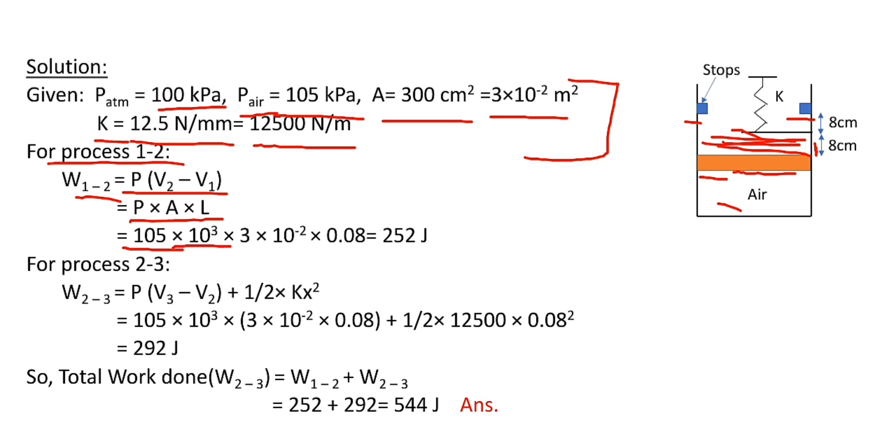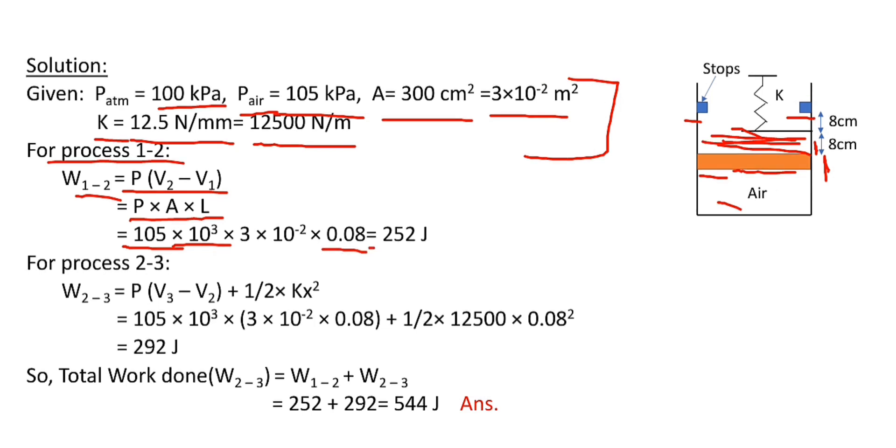Pressure is 105 kPa, equal to 105×10³, area is 3×10⁻², and this length is 8 cm or 0.08 meters. After calculating this value, W₁₋₂ equals 252 Joules.